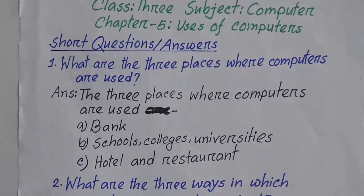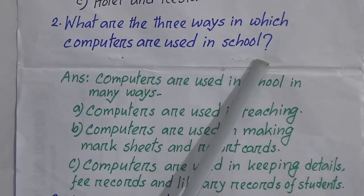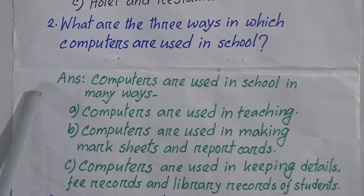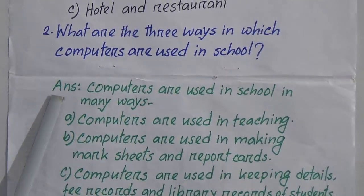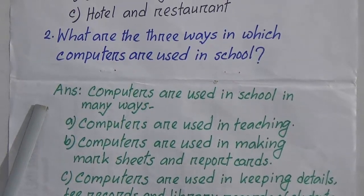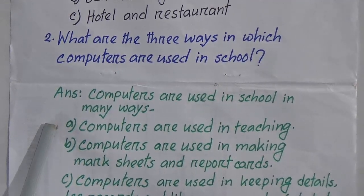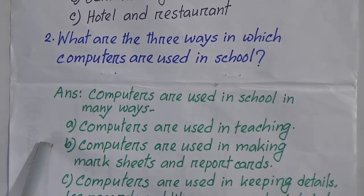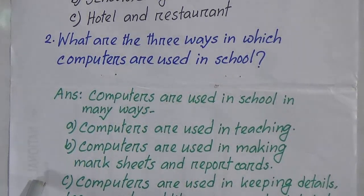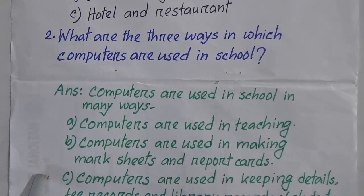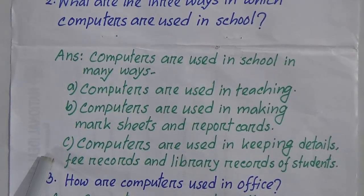Number 2: What are the 3 ways in which computers are used in school? Answer: Computers are used in school in many ways. A) Computers are used in teaching. B) Computers are used in making mark sheets and report cards. C) Computers are used in keeping details, fee records and library records of students.